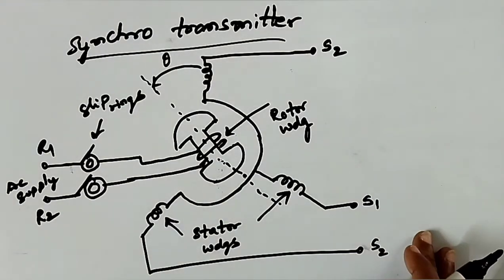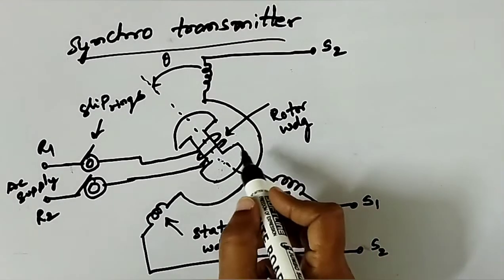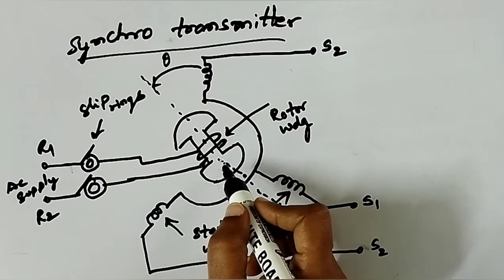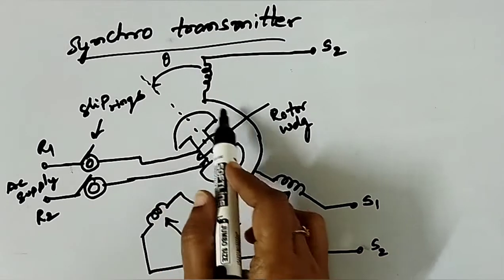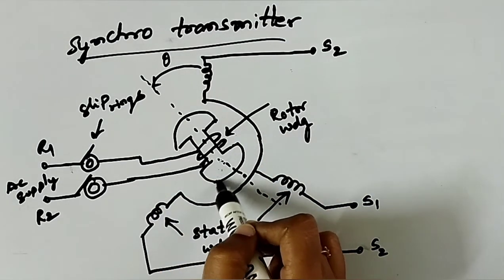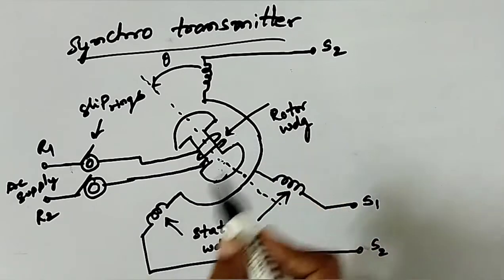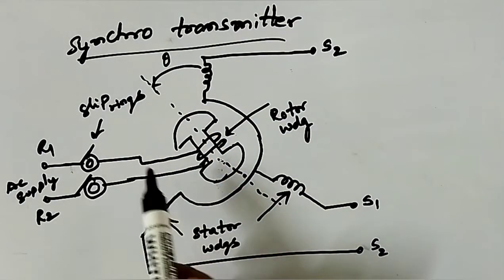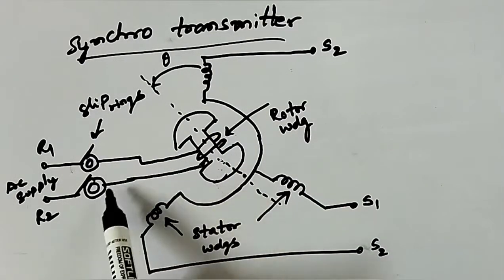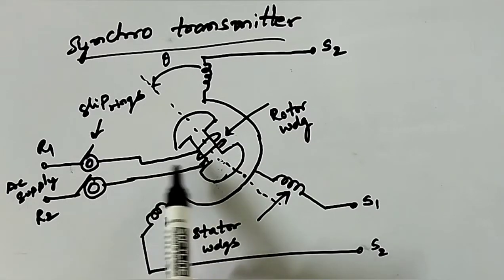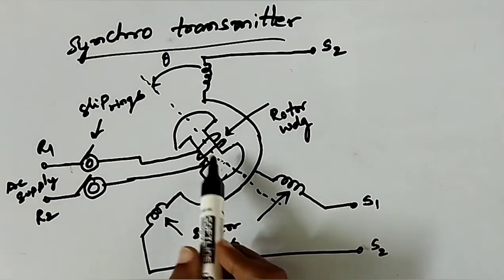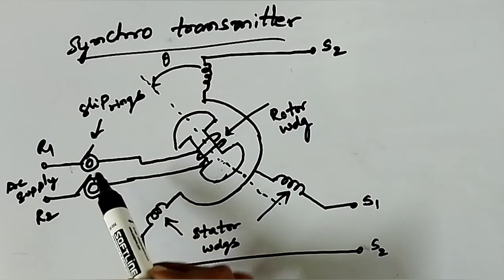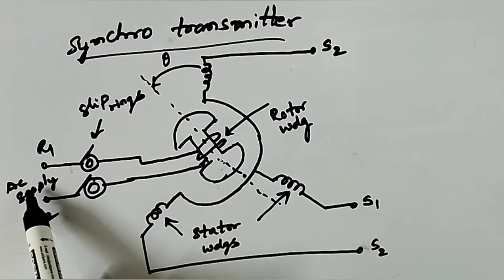Now we will start learning the synchro transmitter. The synchro transmitter has a stator and a rotor. The stator is identical to a stator of a three-phase alternator, and is a concentric type with the axes of three coils 120 degrees apart. The rotor winding ends are terminated on two slip rings, and the input is single-phase AC.